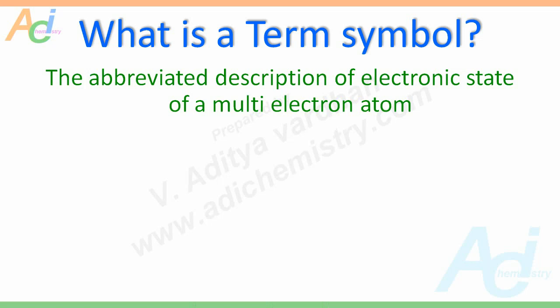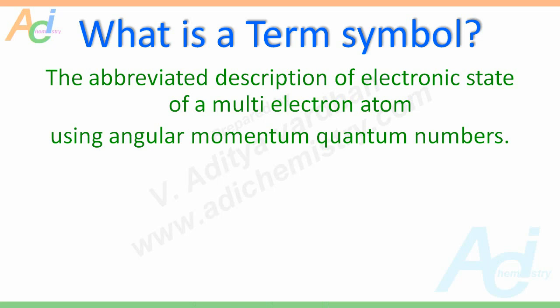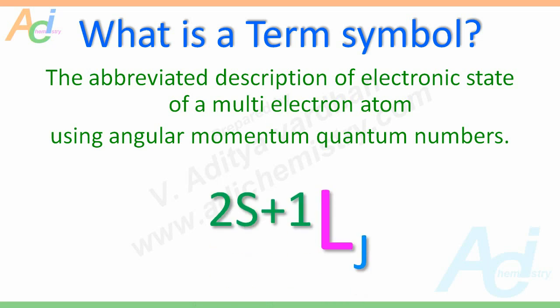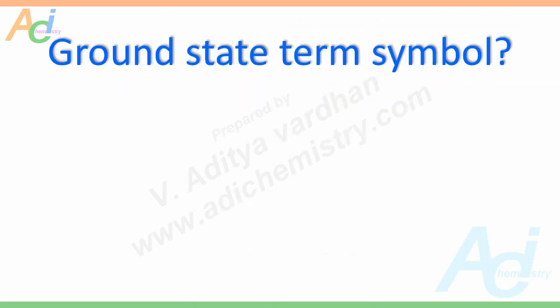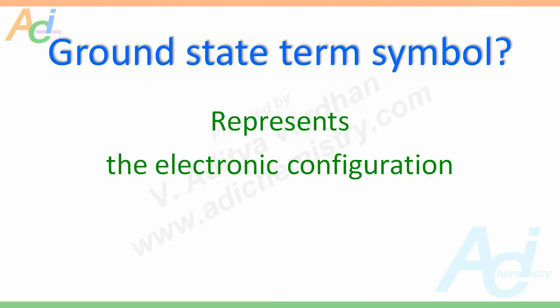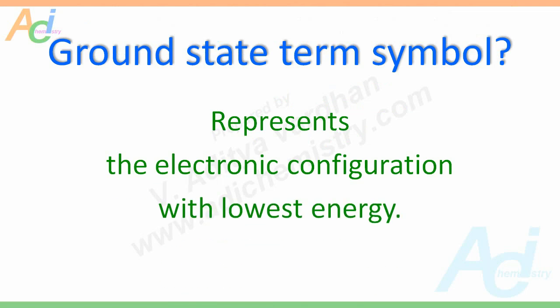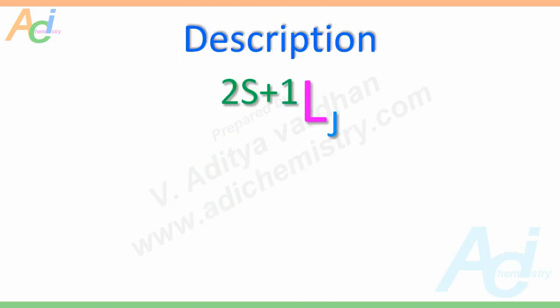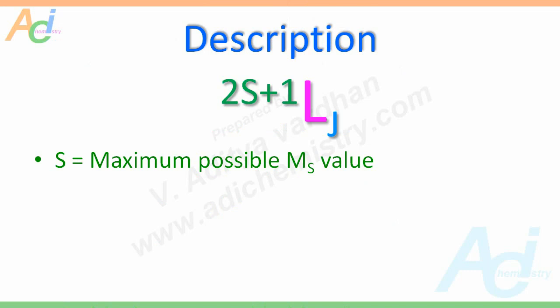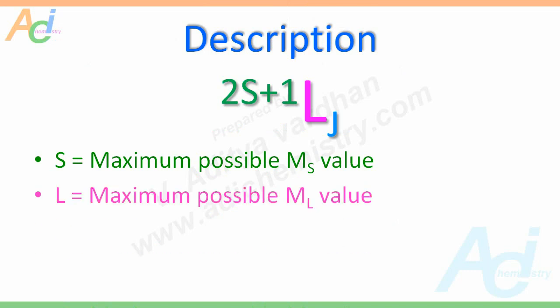Let us recall: what is a term symbol? It is the abbreviated description of the electronic state of a multi-electron atom using angular momentum quantum numbers, represented as 2S+1LJ. Also keep in mind that a ground state term symbol represents the electronic configuration with the lowest possible energy.